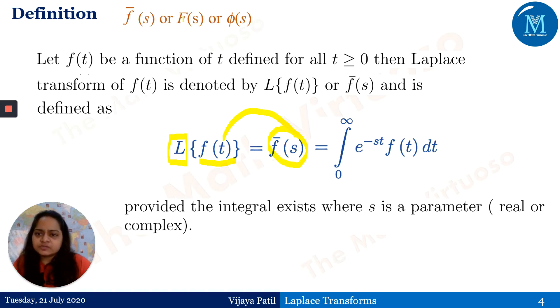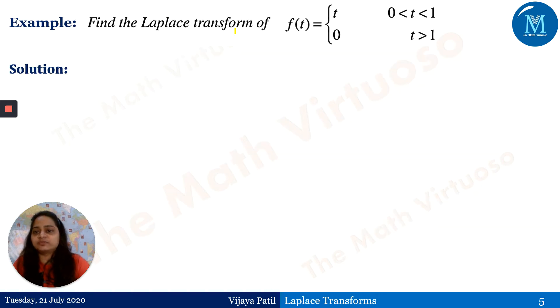A few books use different notations such as f̄(s), capital F(s), or φ(s). Now let us go through a few examples. Find the Laplace transform of f(t) = t when 0 < t < 1.